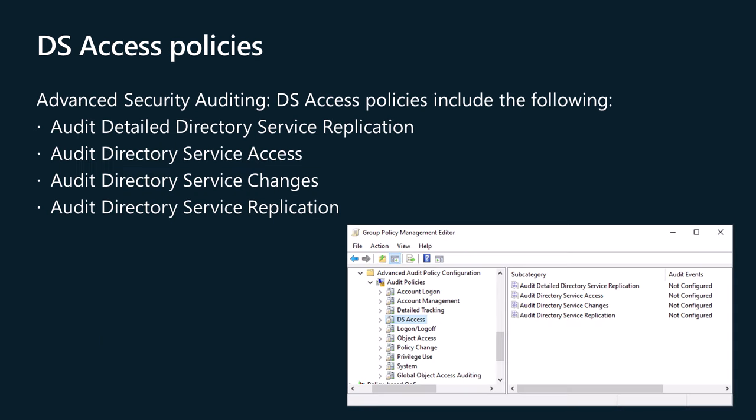The DS Access Security Audit Policy settings provide a detailed audit trail of attempts to access and modify objects in Active Directory domain services. These audit events are logged only on domain controllers. This category includes the following policies.